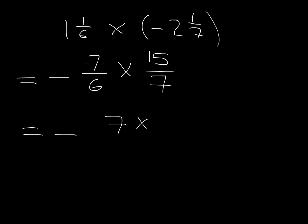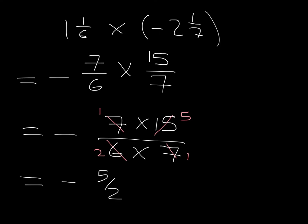Then I've got seven times 15 over six times seven. And I don't want to do big multiplications. So I'm going to try and see when I can cancel. Whatever I divide into the top, I divide into the bottom. Well, I can see, obviously, I can divide top and bottom by seven. And then I've got a 15 and a six. Both of those can be divided by three.